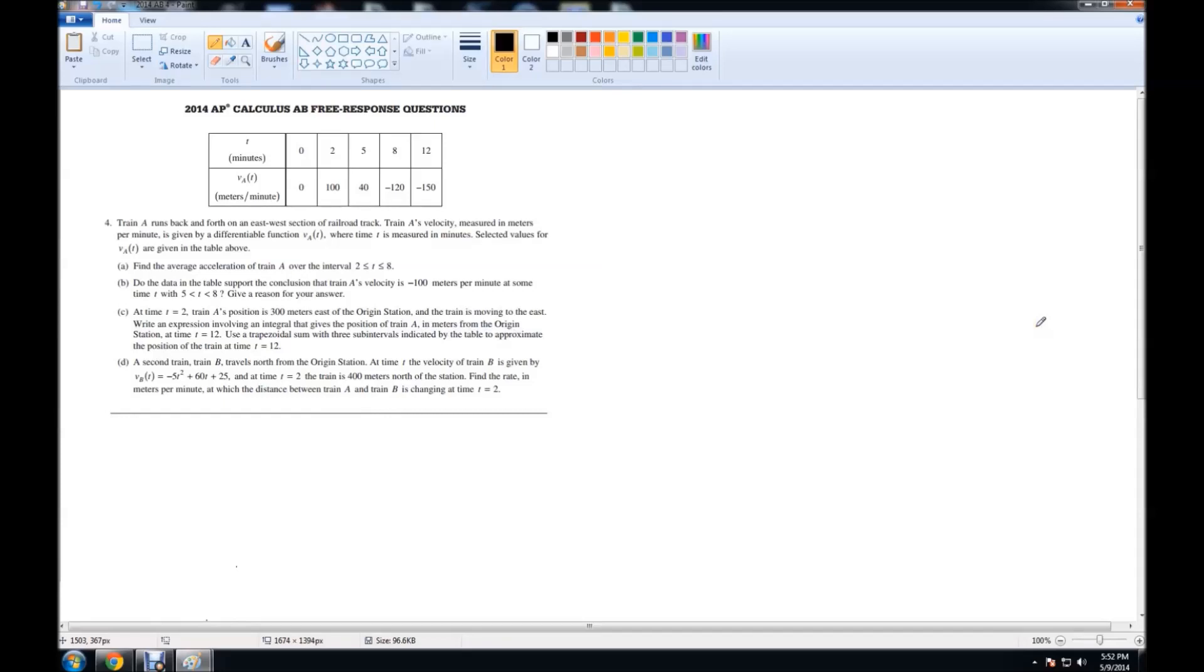For 2014 AP Calculus AB free response question number four, we're given a table and some information about it. Train A runs back and forth on an east-west section of railroad track. Train A's velocity, measured in meters per minute, is given by a differentiable function VA of T, where time T is measured in minutes. Selected values for VA of T are given in the table.